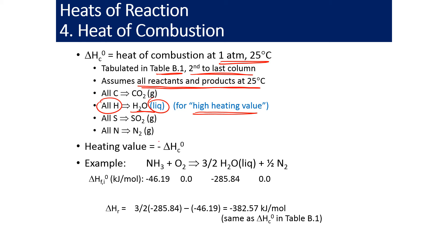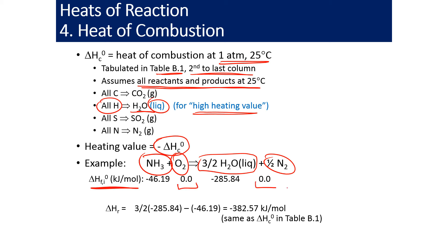Let's do an example: ammonia NH3 plus O2 goes to three-halves H2O liquid plus one-half N2. We look up the heats of formation of all species. O2 and N2 are zero by definition. We do products minus reactants: three-halves times the heat of formation of liquid water, plus zero for nitrogen, minus the heat of formation of ammonia, which is negative 46.19. This gives us our heat of reaction, which matches the delta H of combustion in table B1.